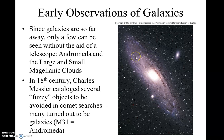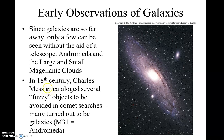The reason we call it the Andromeda galaxy is it's in the direction of the constellation Andromeda. A long time ago, there was a guy looking for comets — his name was Charles Messier — and he cataloged about a little more than a hundred of these objects. Andromeda got the designation M31, and it's still called that today.